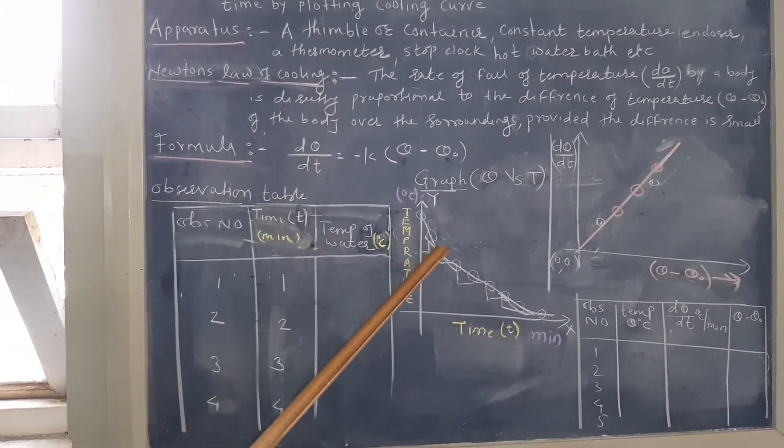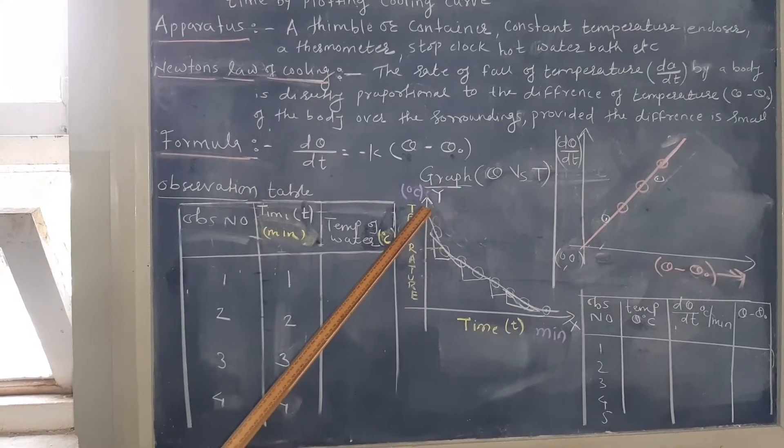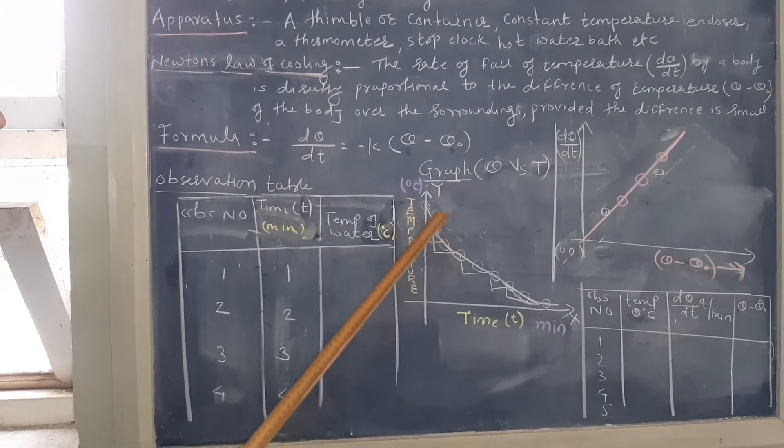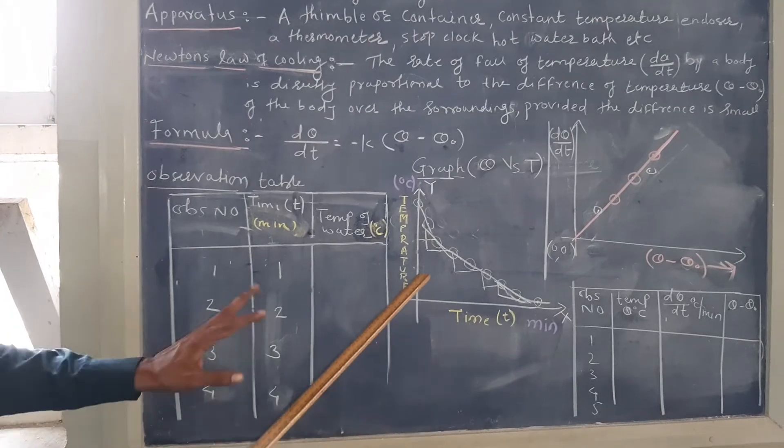And if you try to plot a graph then nature of the graph is exponentially decreases or exponentially decay.